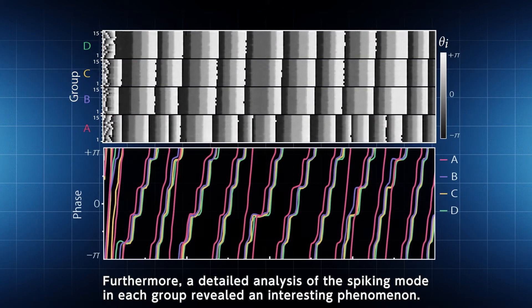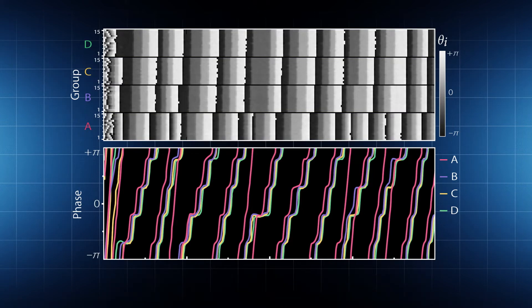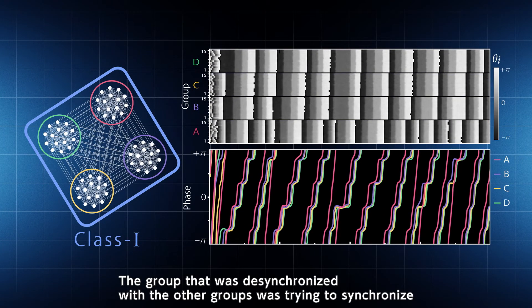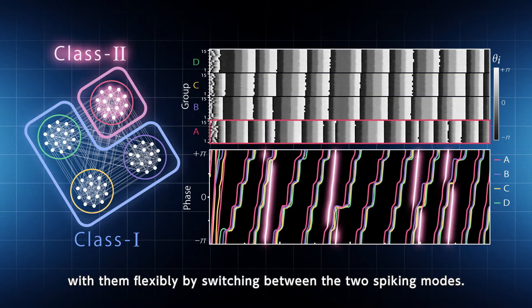Furthermore, a detailed analysis of the spiking mode in each group revealed an interesting phenomenon. The group that was desynchronized with the other groups was trying to synchronize with them flexibly by switching between the two spiking modes.